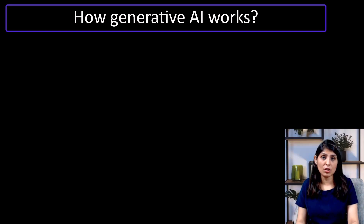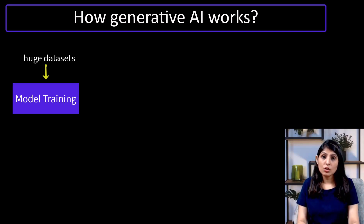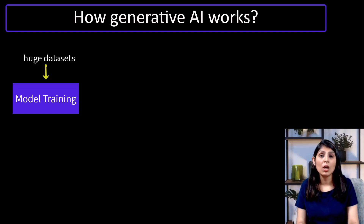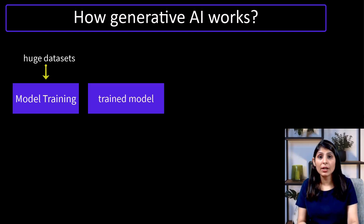Now we know what generative AI is, what kind of data it can generate, and we've seen a few generative AI models. Let's look at how generative AI works. The first task is training the model. To train a generative AI model, we need huge datasets that contain examples of the type of content the model is meant to generate. For example, a text generation model needs training data containing large collections of books, articles, and websites, while an image generation model needs training data based on large collections of images.